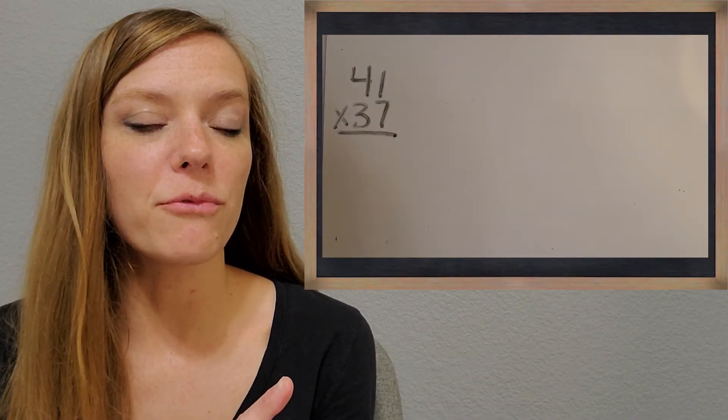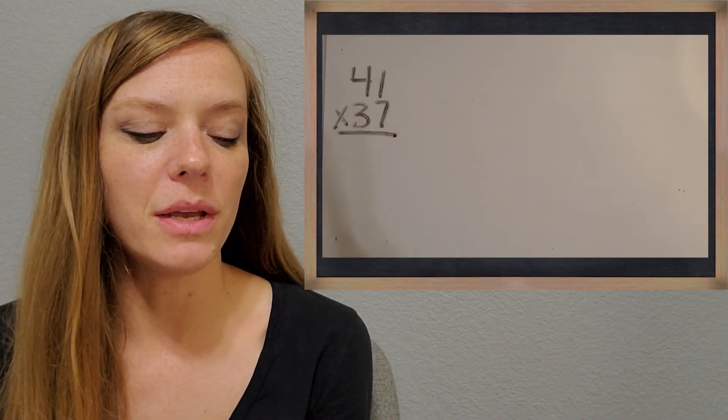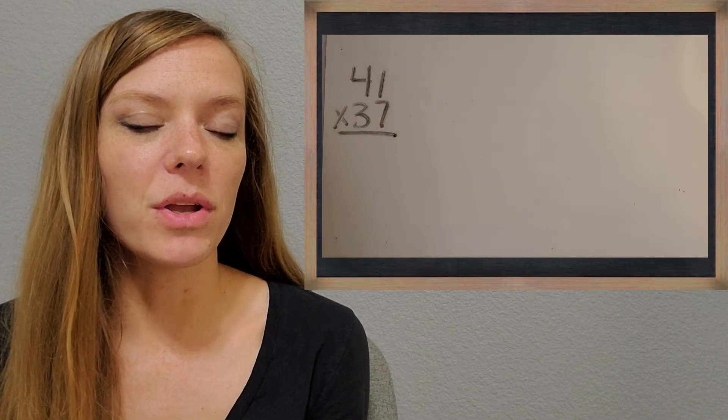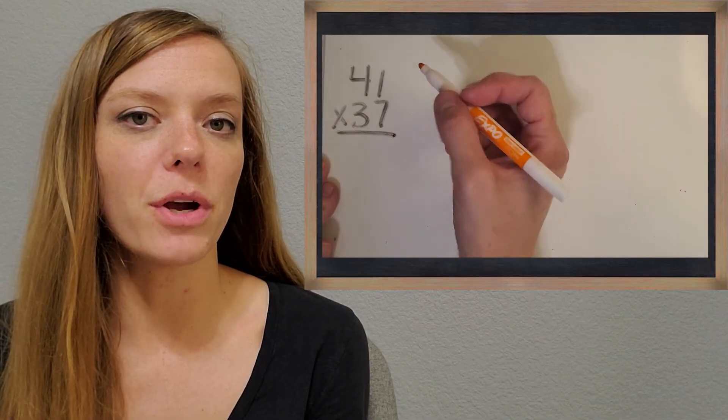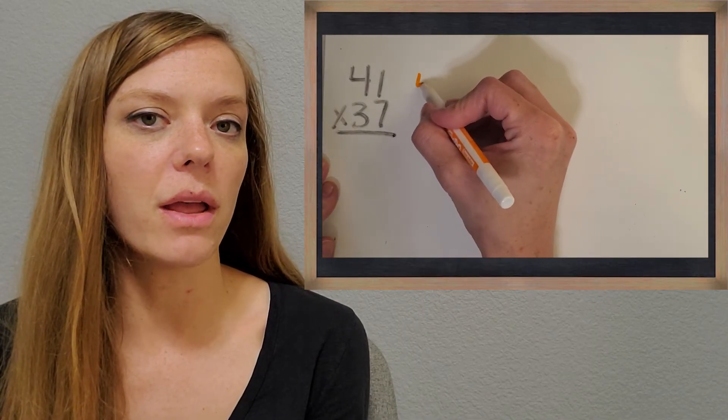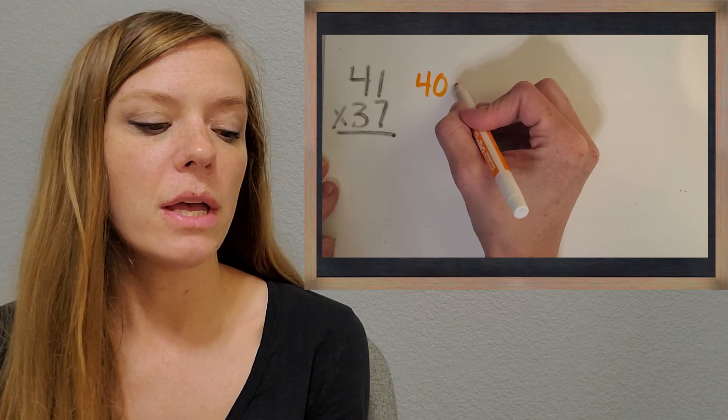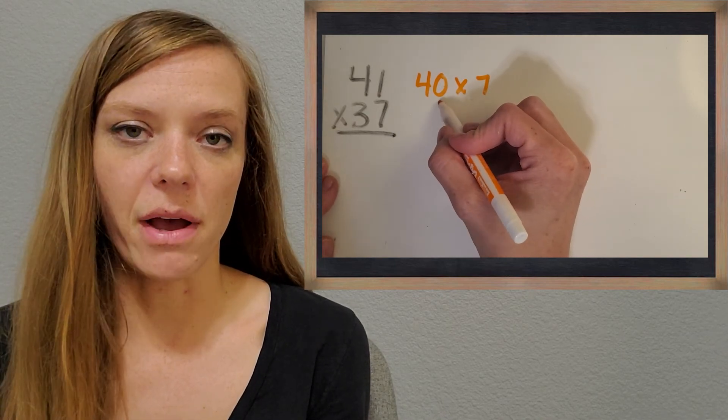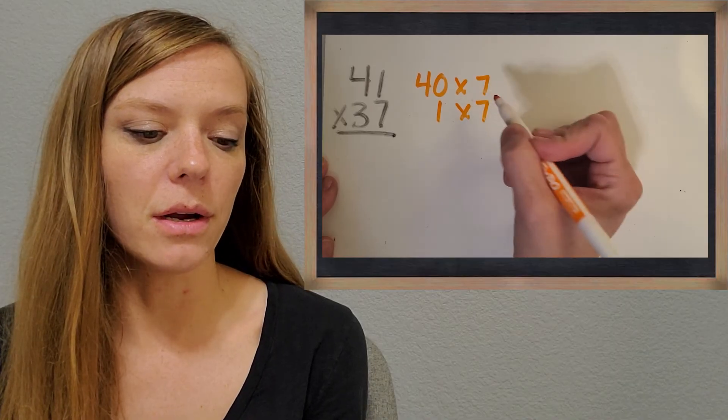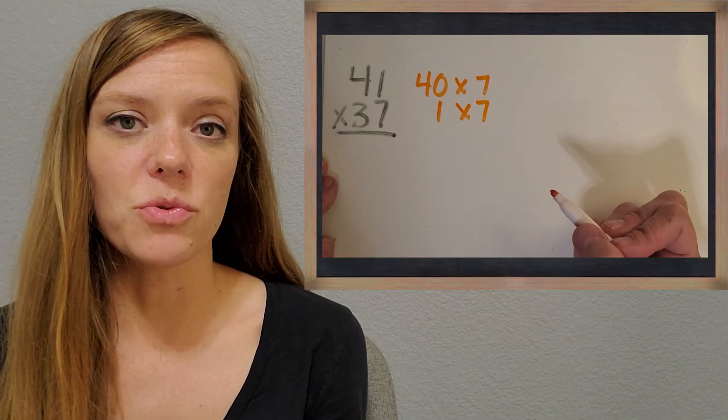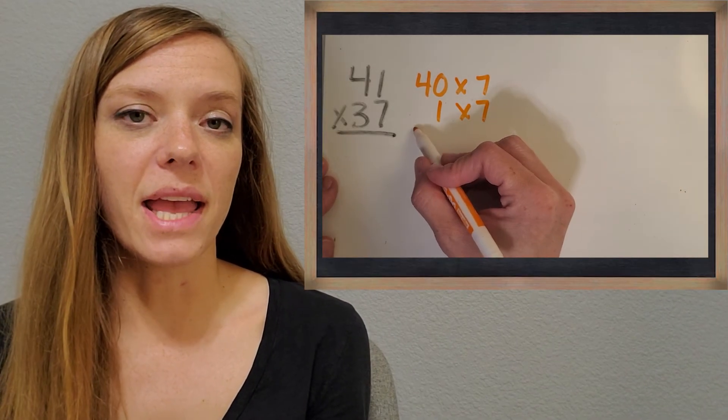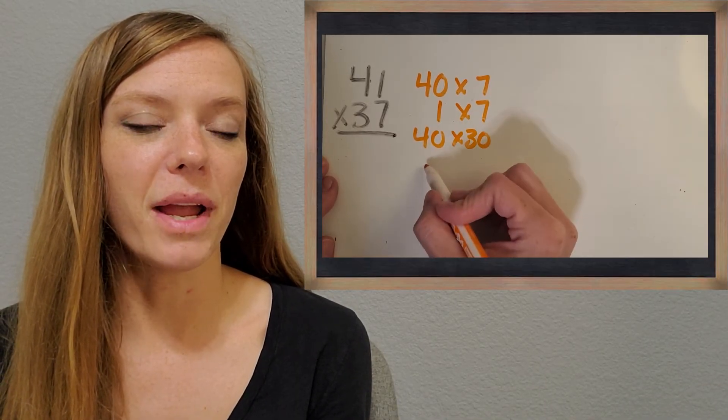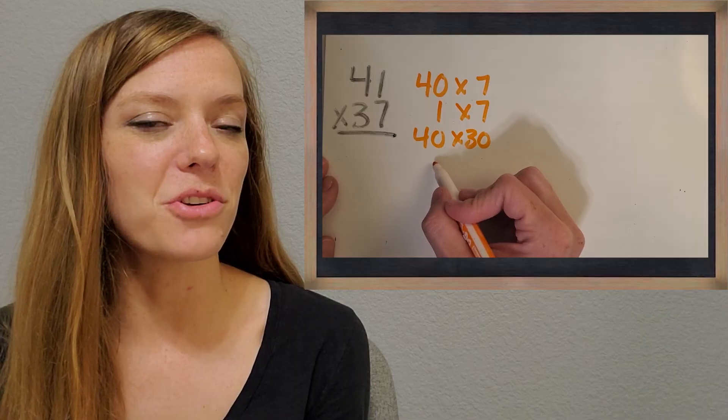All right, so I have one more problem for you to try on your own. It's 41 times 37. And I want you to try that same partial product strategy. So we're going to write all of the different parts using their place value. So it makes it a little easier. And then solve each one, add them up at the end, and we can see if we get the same answer. Pause the video and give it a try.